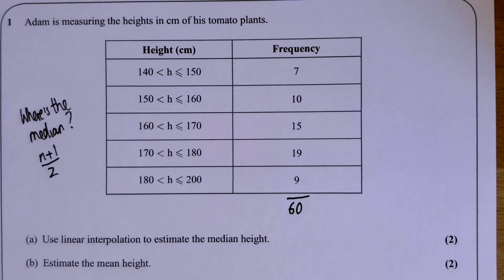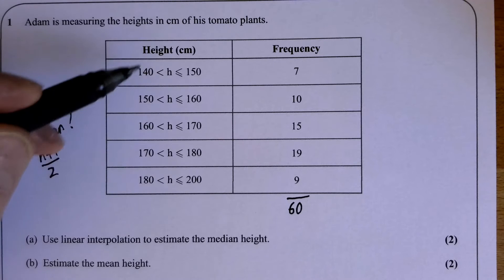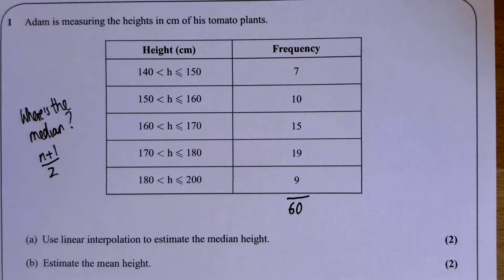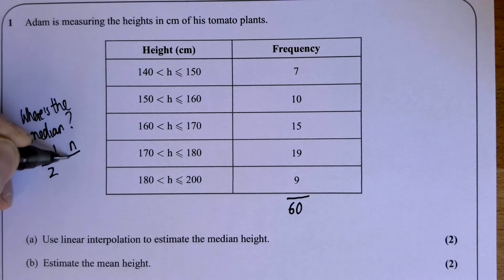However, with a large number of values—I've always sort of used 50 as the cutoff—the difference between the 30th and the 31st and the 30.5th value is barely going to be any difference at all. And we're only estimating anyway because we've got grouped data; we don't know the actual values.